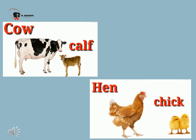Cow — Calf. Baby of a cow is calf. Do you know that the average cow is 2 years old when she has her first calf? Calves are fed milk until they are 8 to 9 months old. Next animal is hen — Chick. The baby of the hen is chick. Over 50 billion chicks are born every year, and the heartbeat of a chick is 275 beats per minute.